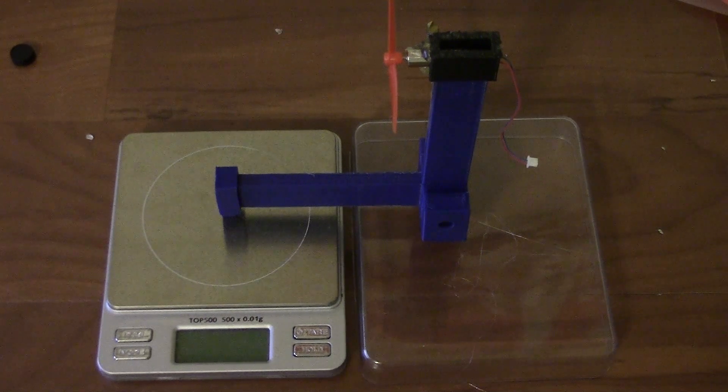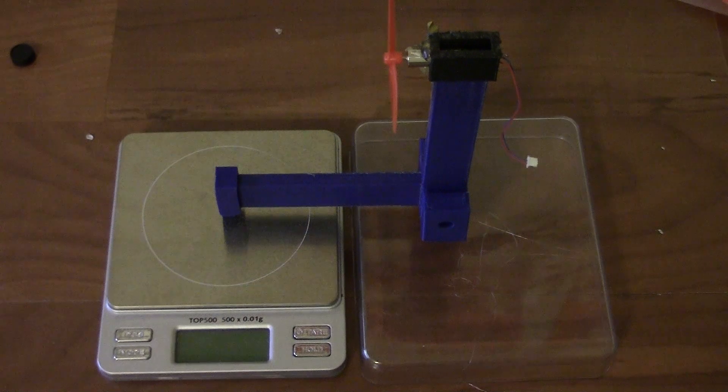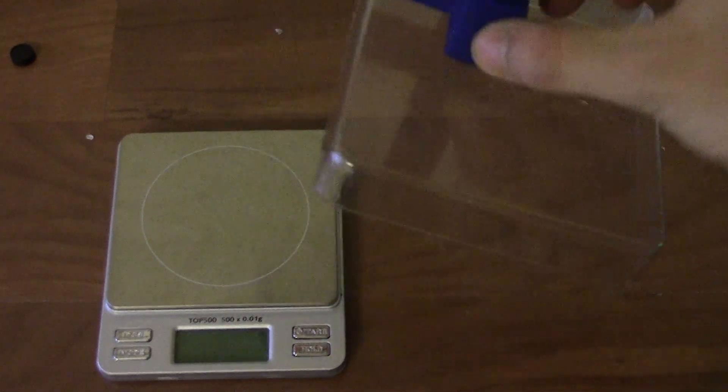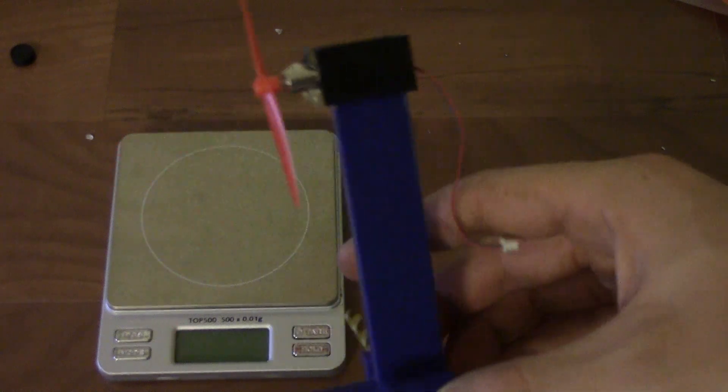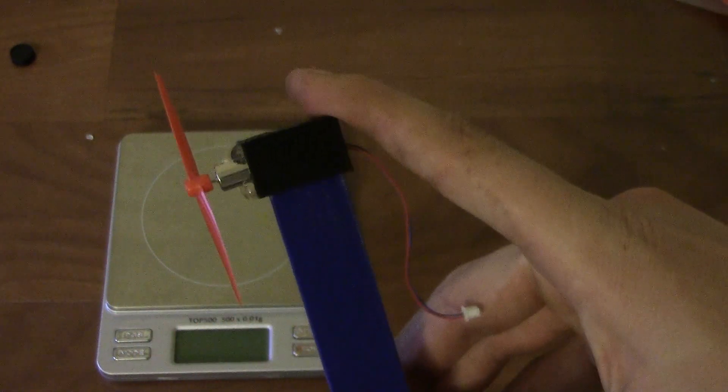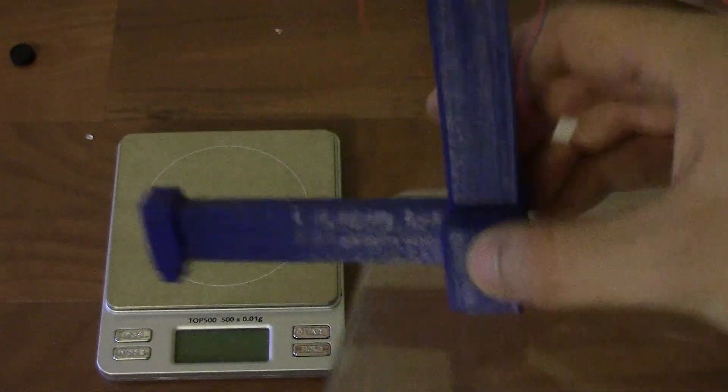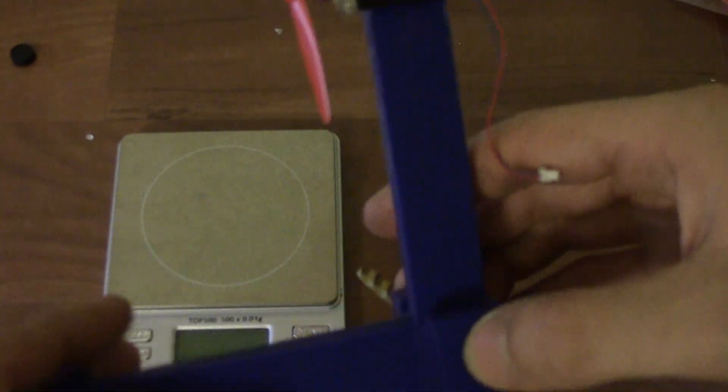Here we have the thrust stand that we've designed in the last four, maybe development videos. Here it is 3D printed in blue, and I 3D printed this one in black for the motor mount. The motor that's in here is a 7 millimeter and it's hot glued into this thing, and this thing's just slid on top. Then you see our little bumper that's going to press down is right here.